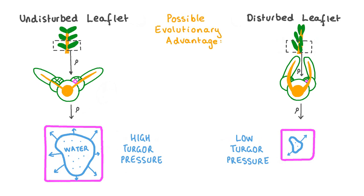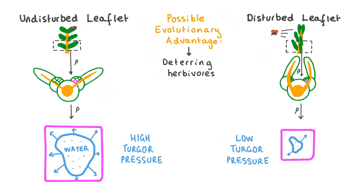It has been proposed by scientists that this thigmonastic response in Mimosa may present an evolutionary advantage. Being touched or shaken may indicate that a herbivore is nearby, or that a herbivorous insect has landed on a leaflet and is about to eat it. Closing the leaflets quickly and drooping may make the plant appear smaller and more wilted to large herbivores, and may dislodge smaller herbivores like insects, preventing the plant from being eaten.